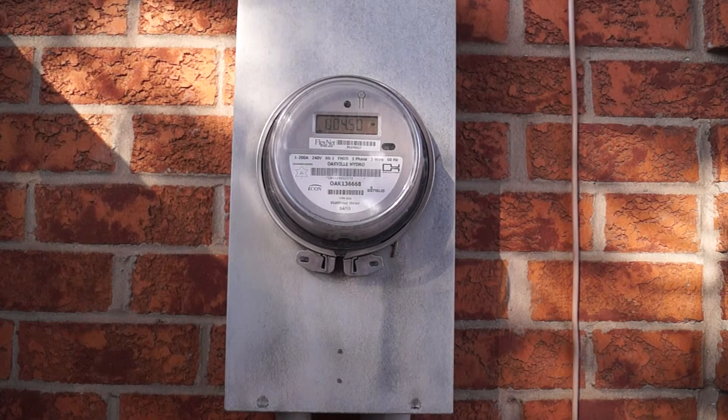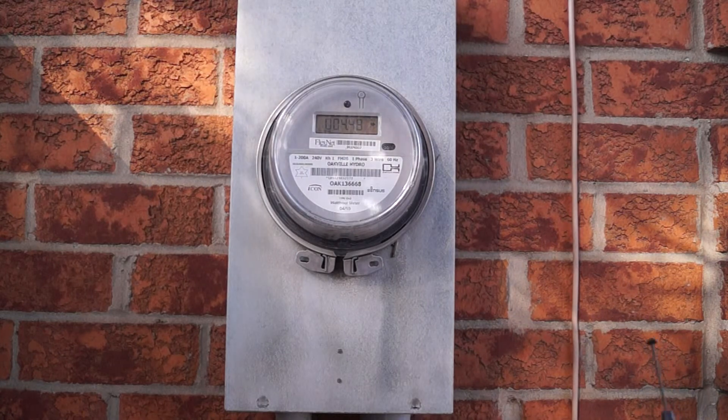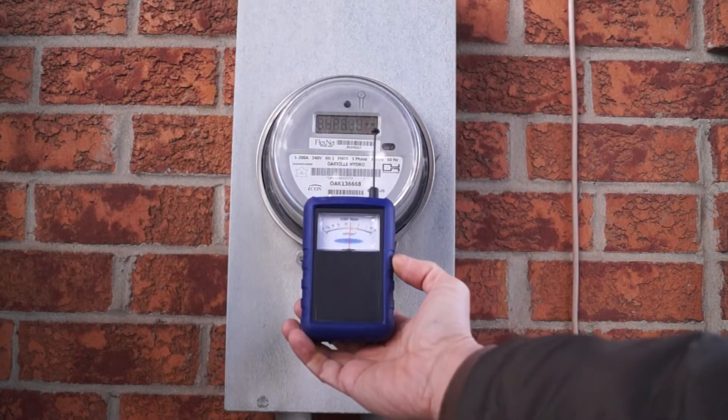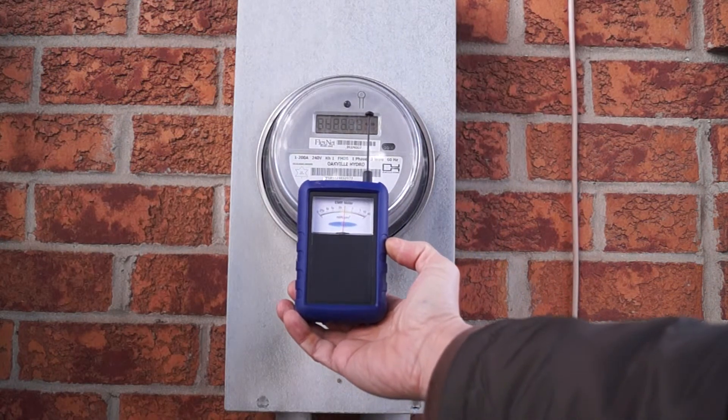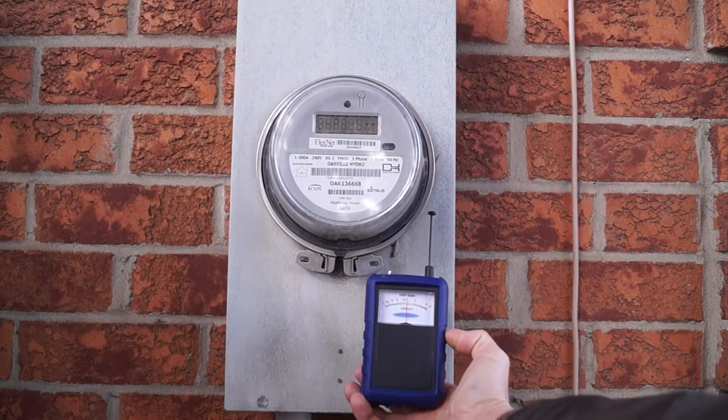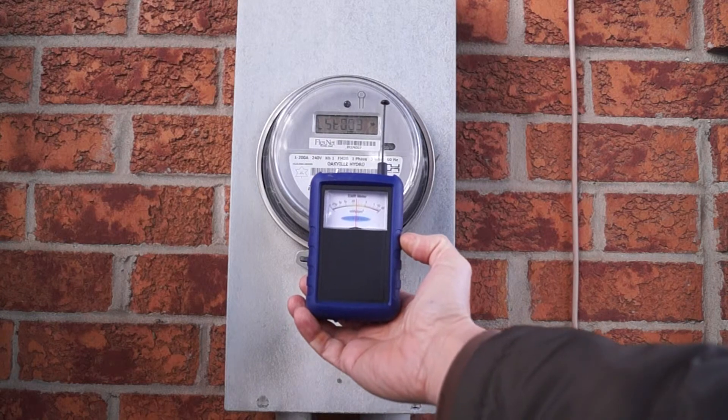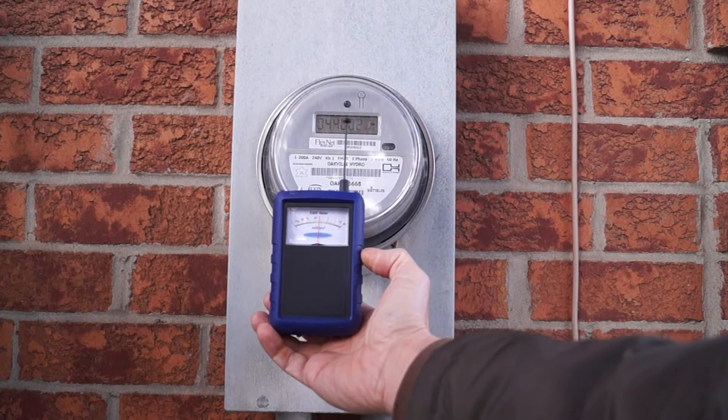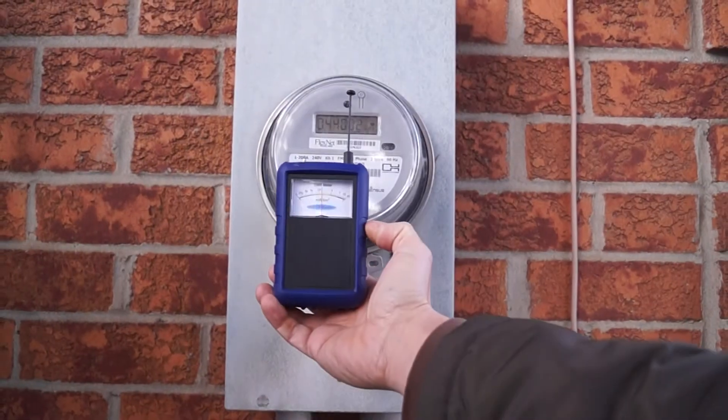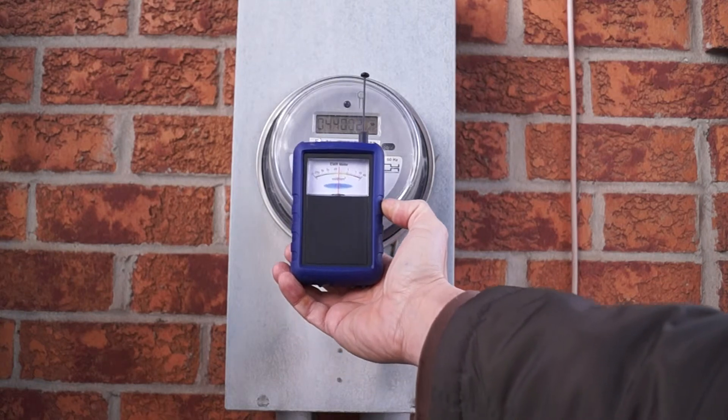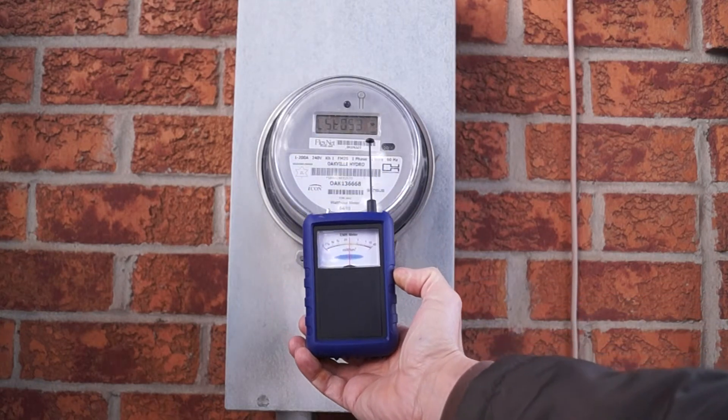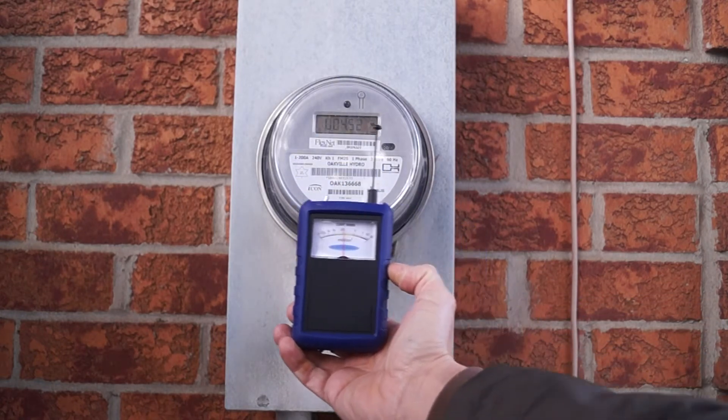This is a typical smart meter running at Oakville Hydro. As you can see, the radiation from the smart meter itself and all around it is already at about 0.02 milliwatts per square centimeter, which is a pretty high reading in general. We can clearly see the pulsation from the smart meter because of all the other electrical equipment around, but we're going to see it on the inside.